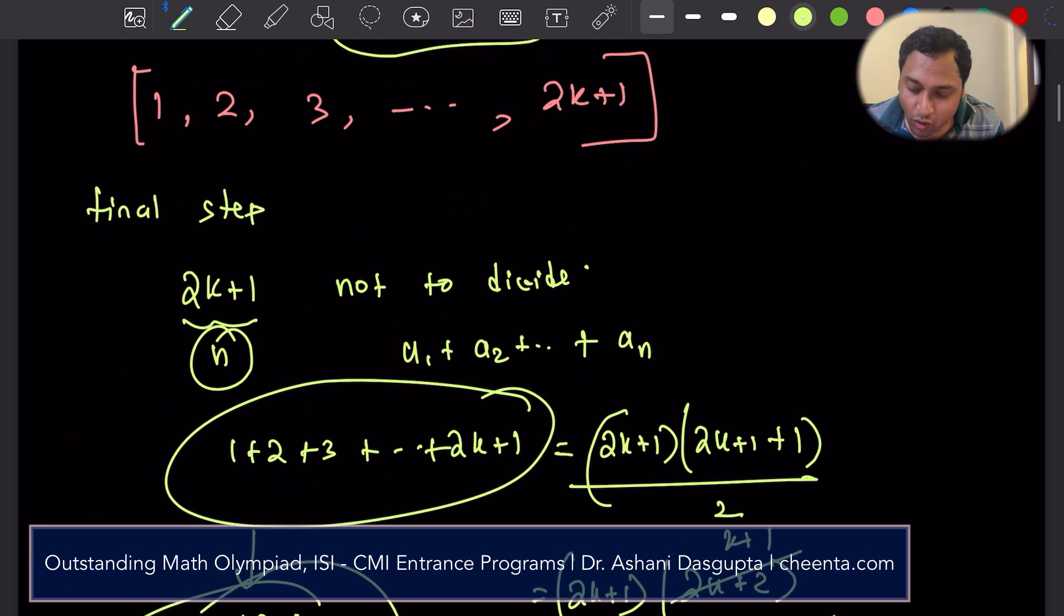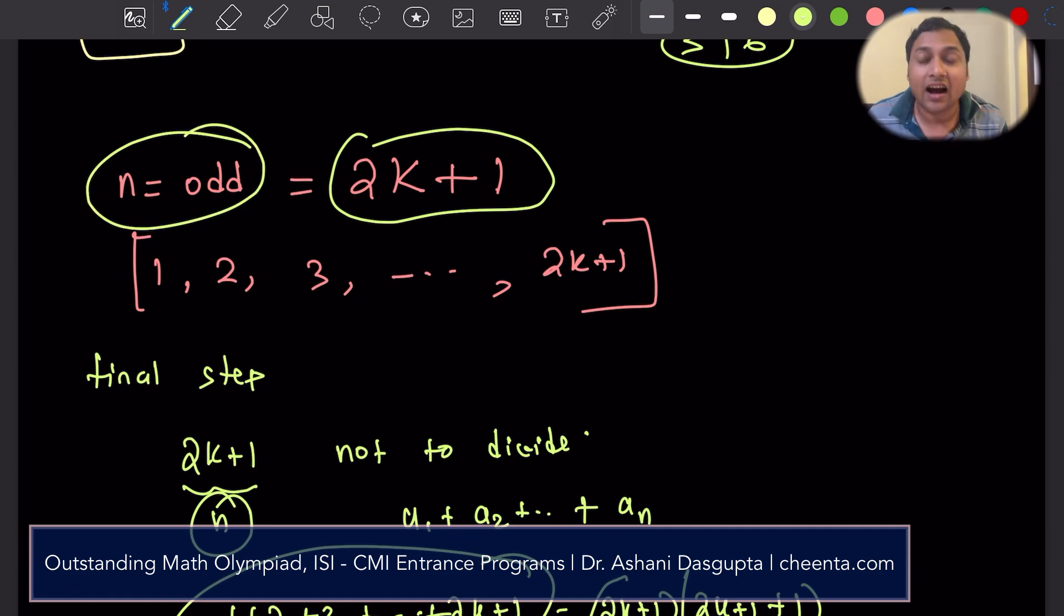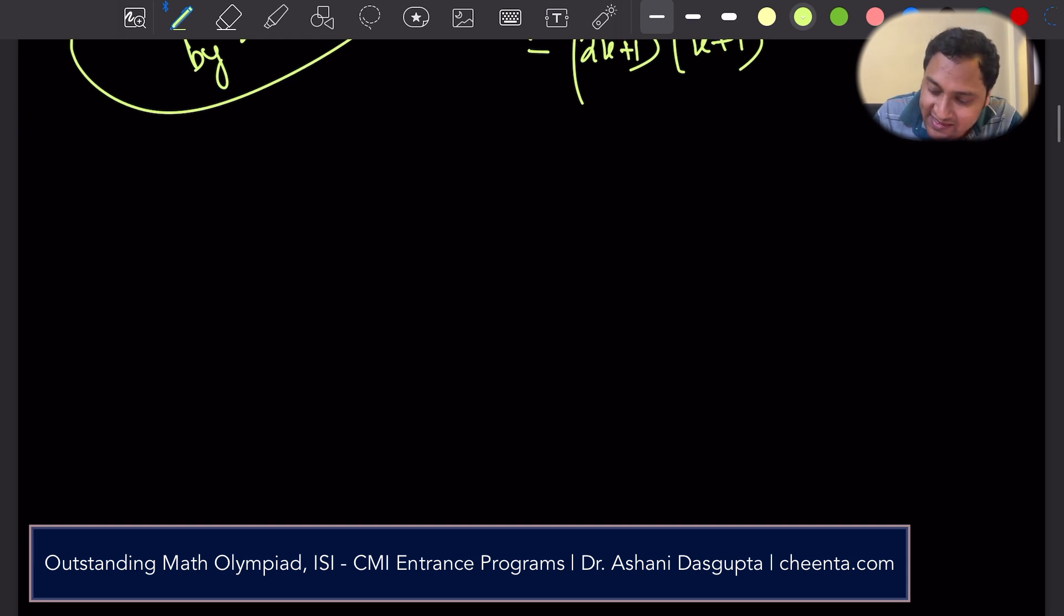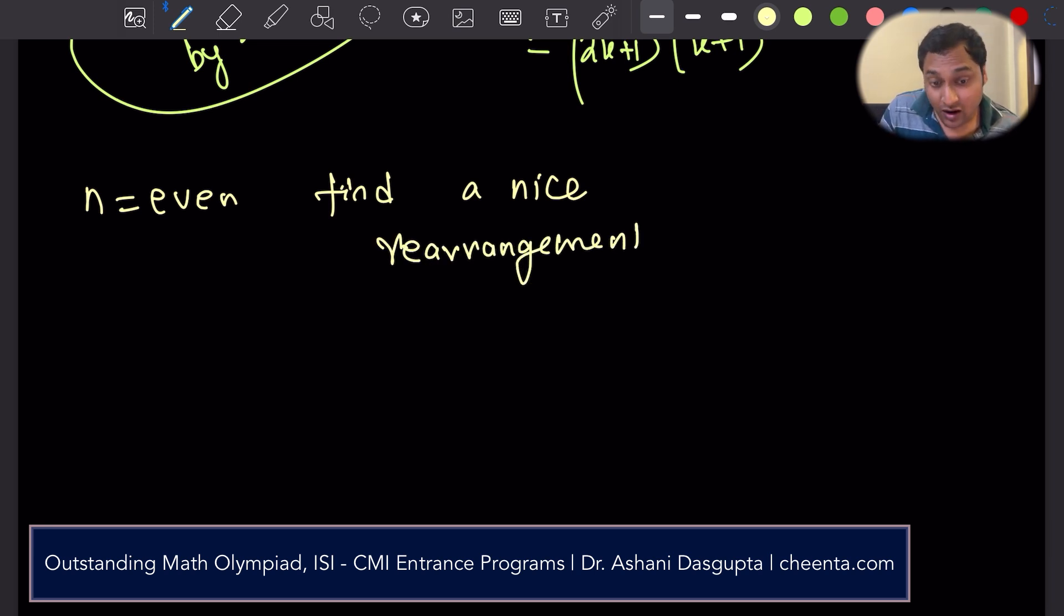So whatever happens before the final step, maybe it worked in all the previous steps, but in the final step, whatever your rearrangement is, your sum would always be divisible by the number itself, number of numbers, n. So for n odd, obviously, there are no nice rearrangements. What if n is even? The question says, for n even, find a nice rearrangement. Okay, how can we do that?